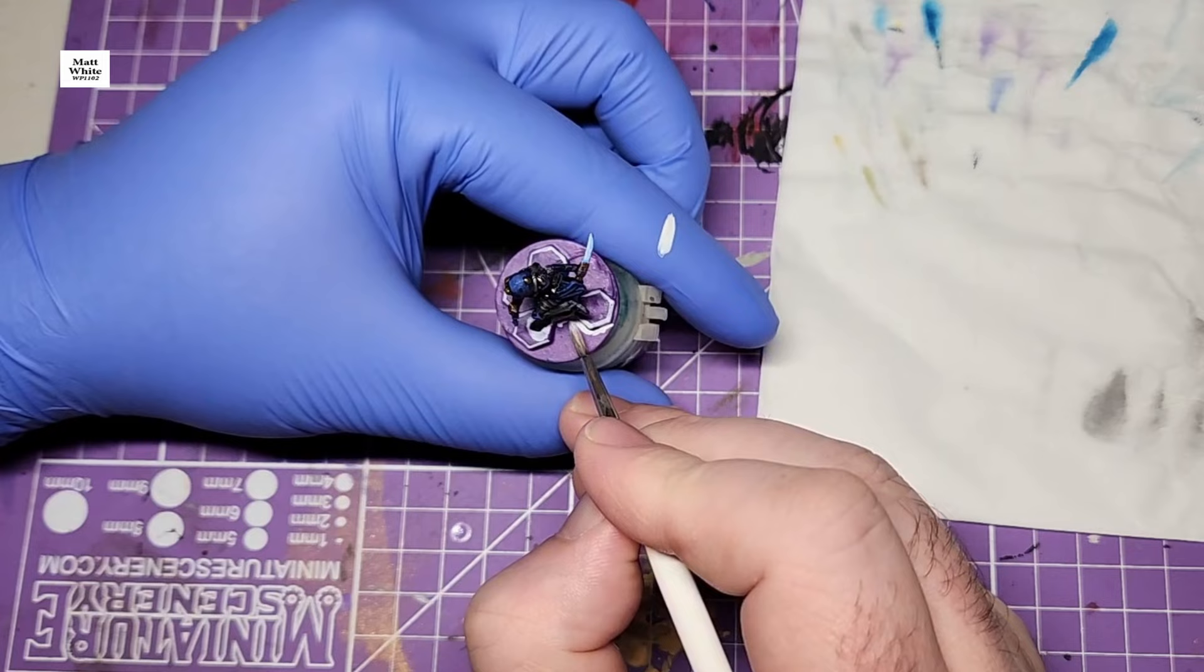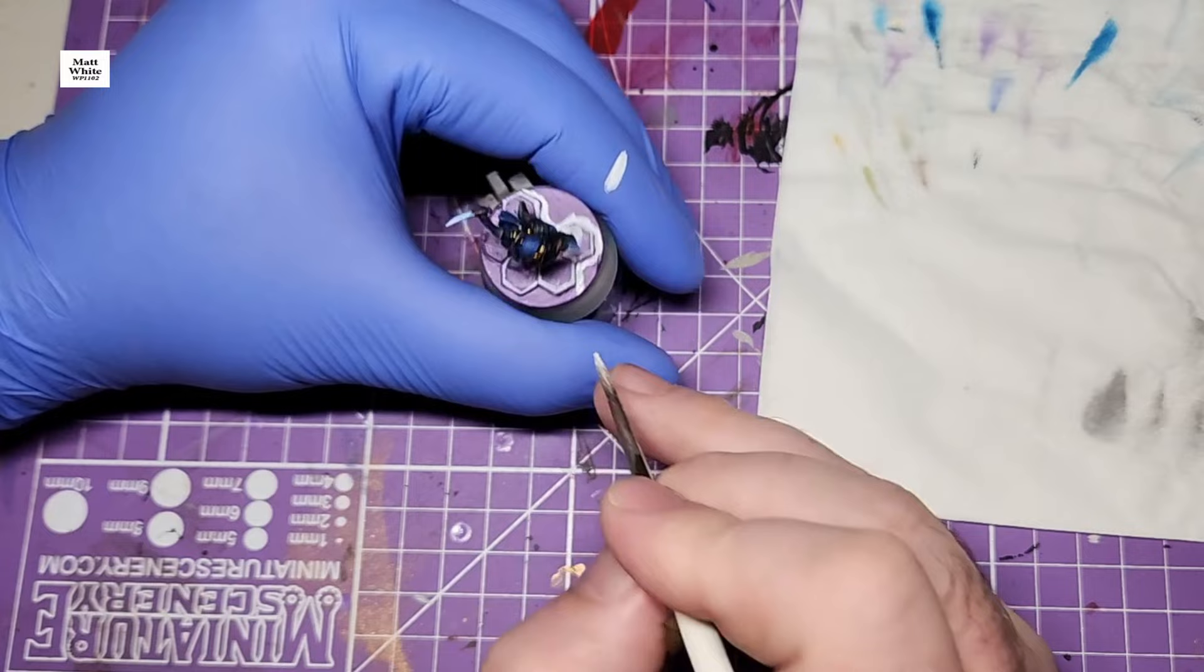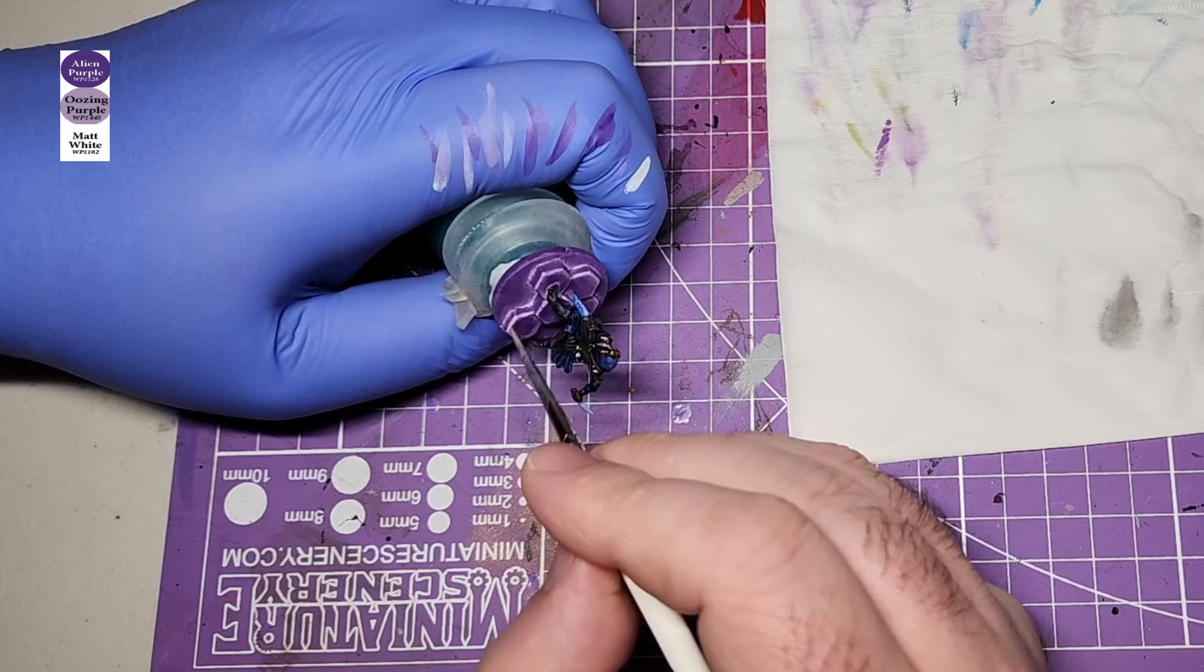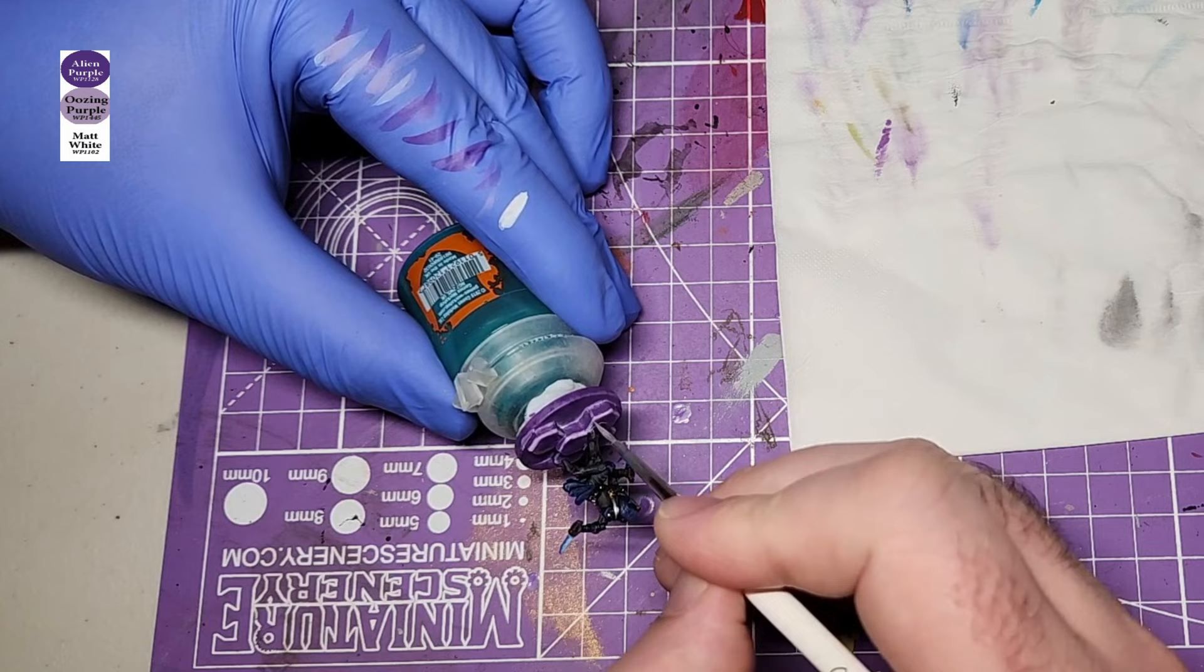Around the edges of all the hexagon things and his feet I did white. I wanted it to almost look like he was stepping through dimensions and the platforms are spawning to give him something to step on. It's a bit hard to explain, but I had a vague idea in my head. Getting it to look decent, that's the challenge though. After doing the white edges, I put Alien Purple, Oozing Purple, and White on my palette, then I just went back and forth between the three of them trying to get a bit of a blend.